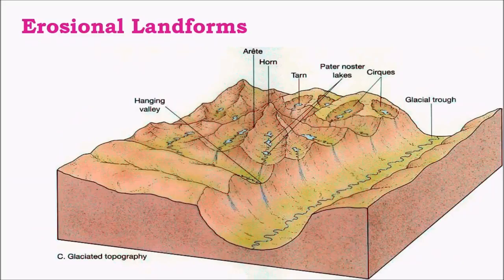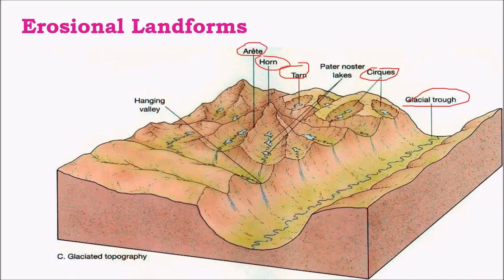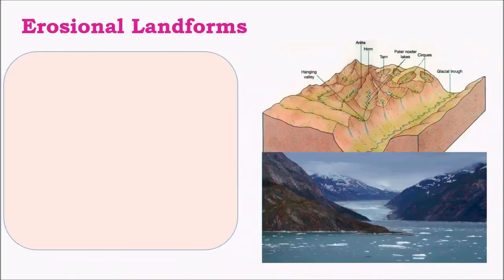Coming to erosional landforms associated with glaciers, the major ones are: glacial trough, cirques, tarn lakes, horns, arêtes, and then hanging valleys and waterfalls. Let's take a look at all these erosional landforms in detail.